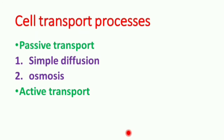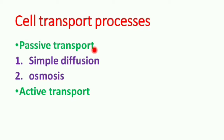Generally, the cellular transportation processes are classified into two types: one is passive transport, another one is active transport. In passive transport, the substances are moved from higher concentration to lower concentration without the utilization of energy.